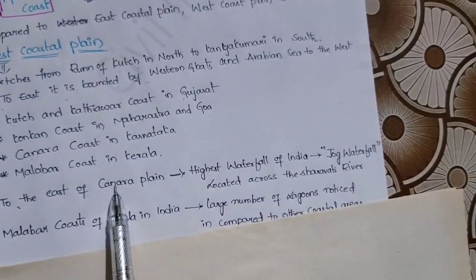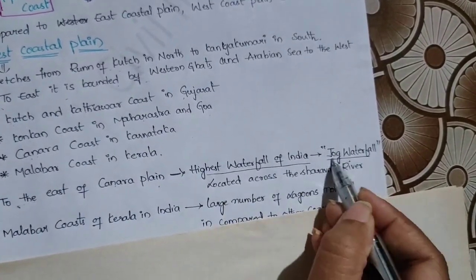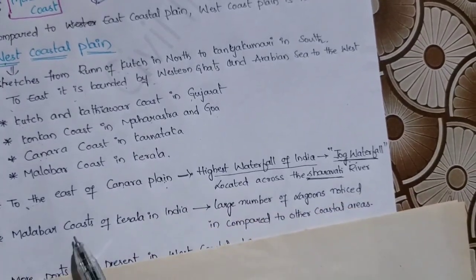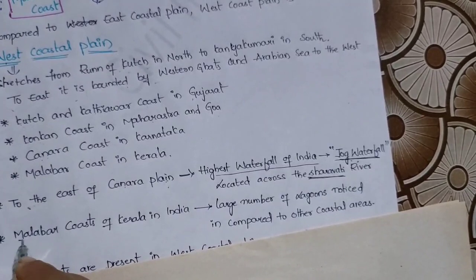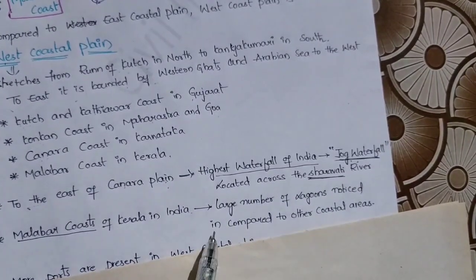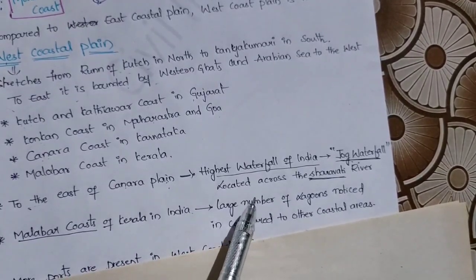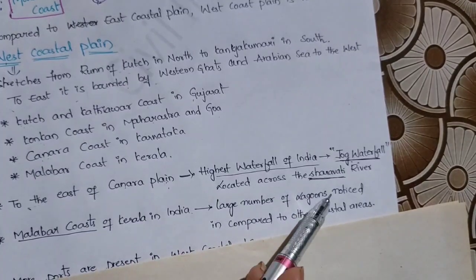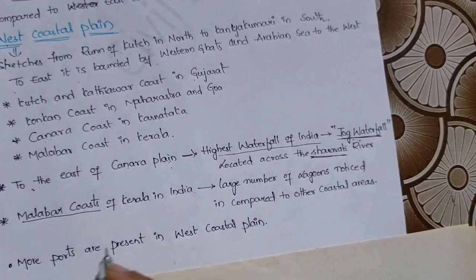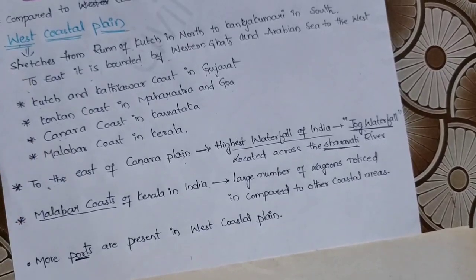To the east of the Kanara plain, the highest waterfall in India — Jog Falls — is located. The Malabar Coast in Kerala is famous for having the largest number of lagoons compared to any other coast. The western coast is also famous for major ports — major ports are found along the west coast plains.